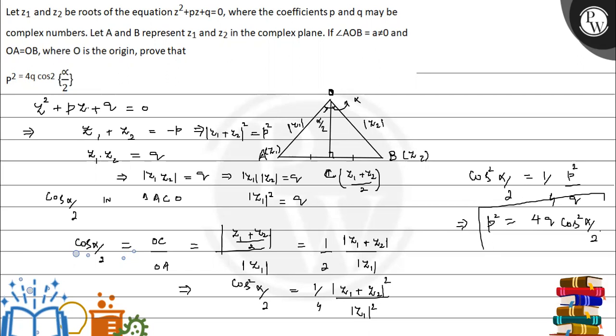So we have proved this: p² = 4q cos²(α/2). Hope you have understood this. All the very best.